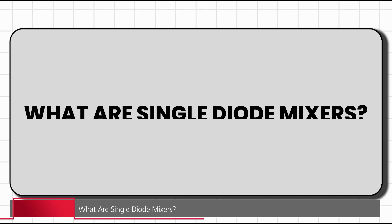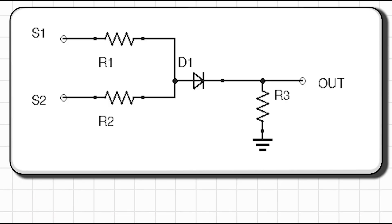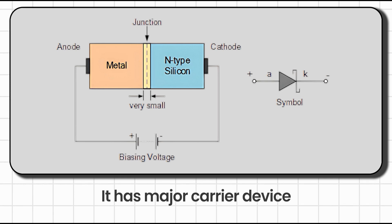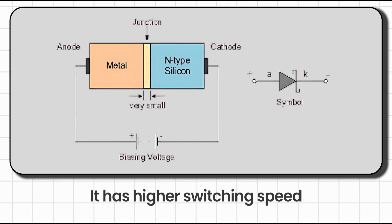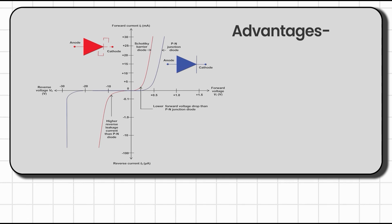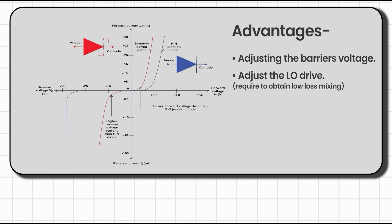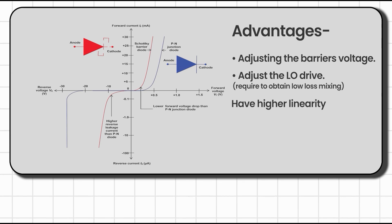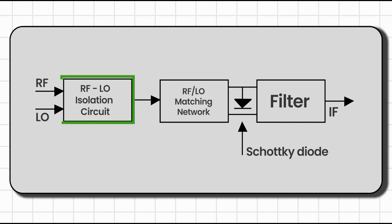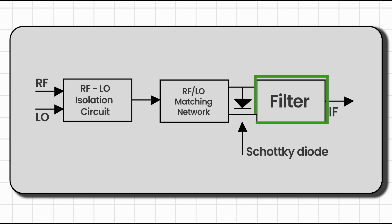Now let's understand single diode mixers and the pros of diode mixers over other types. Modern diode mixer designs use Schottky diodes. The main reason is that the Schottky diode is a majority carrier device, meaning it has higher switching speed than other PN junction diodes, making it suitable for designing mixers up to 13 GHz or more. By adjusting the barrier voltage we can adjust the LO drive, which leads to lower loss and higher linearity. There are four building blocks: the RF-LO isolation circuit, RF-LO matching network, the DC-biased diode circuit, and a filter block.